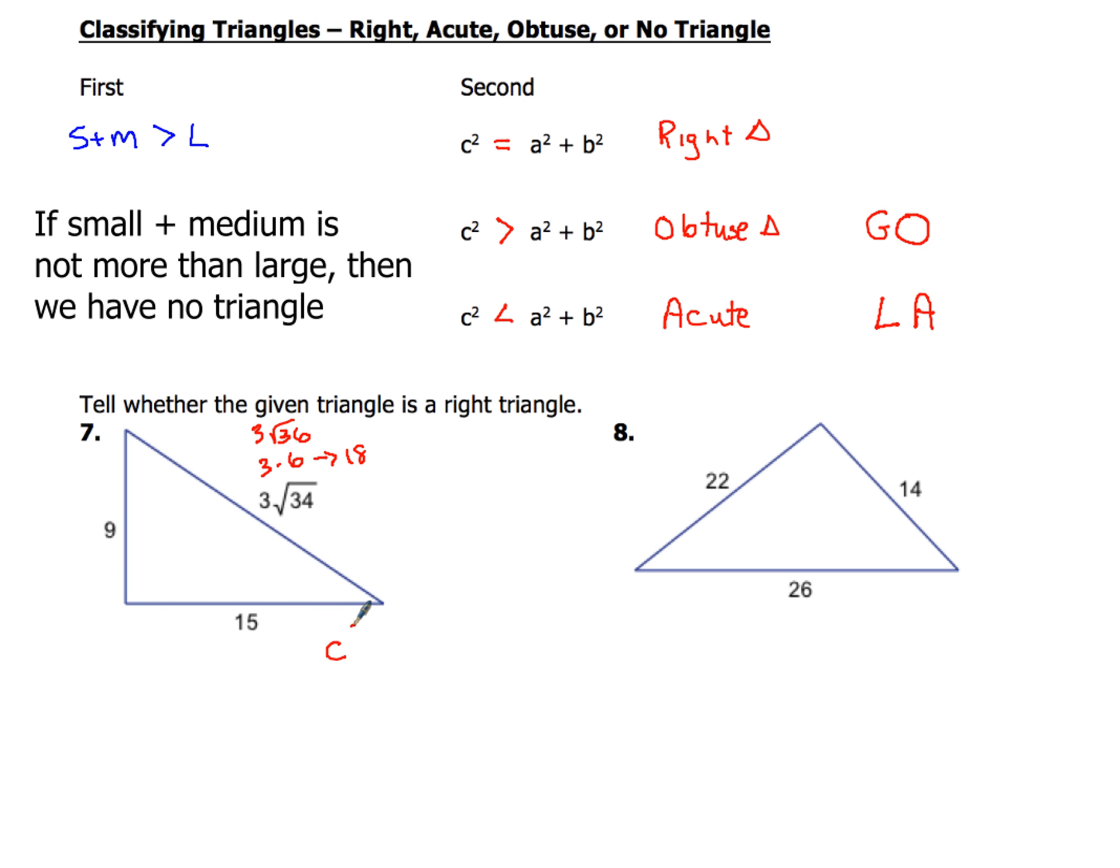Check it out. I'm going to write c squared. And then I'm going to leave a little line. And then a squared plus b squared. Now, sometimes people put a circle there. Other times, I just want you to leave a line. Now for c squared, so that's going to be 3 times the square root of 34. All of that's going to be squared. And I've got my line. And a squared, so that's 9 squared plus 15 squared.